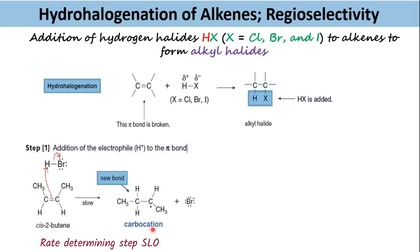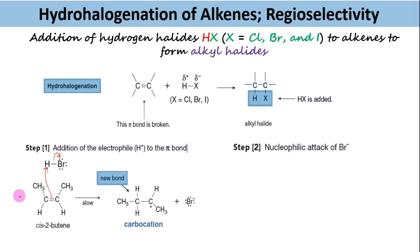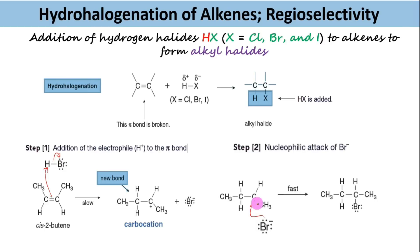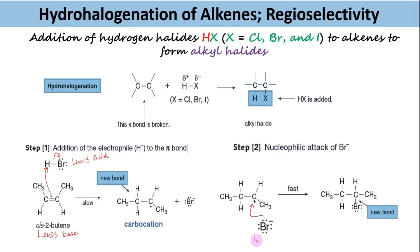This step is rate-determining because two bonds are broken but only one bond is formed. Step 2 is the nucleophilic attack of the bromide anion on the carbocation, which forms the new C–Br bond. In the first step, the alkene acts as the Lewis base that donates an electron pair to hydrogen bromide, which acts as the Lewis acid. In the second step, the bromide anion acts as Lewis base and donates an electron pair to the carbocation, which acts as Lewis acid.